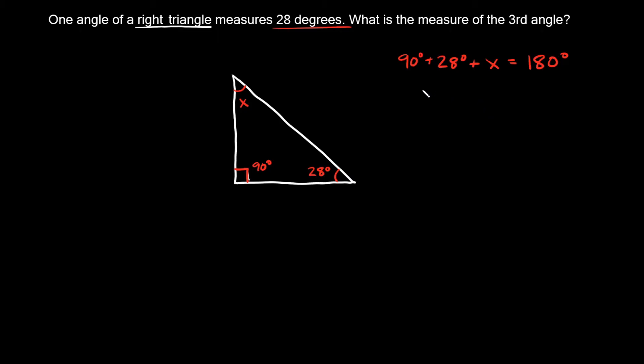So 90 plus 28 equals 118, and we're adding x to that, which should equal 180 degrees. Now solving for x, we subtract 118 from both sides. These go to zero, so we're left with x equals 180 minus 118, which equals 62. So the measure of the third angle is 62 degrees.